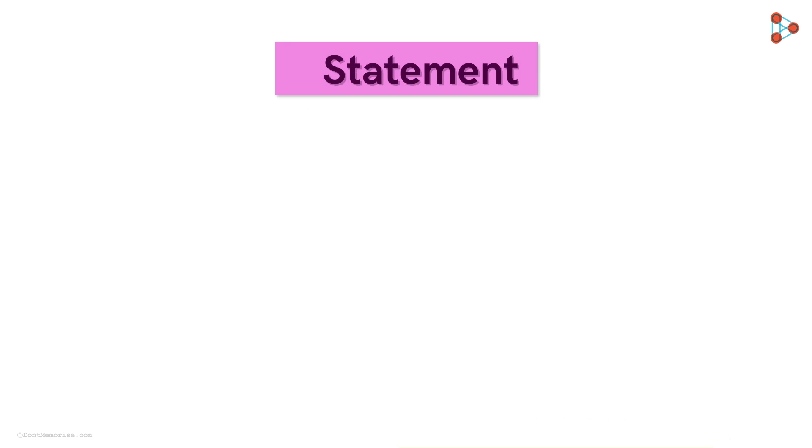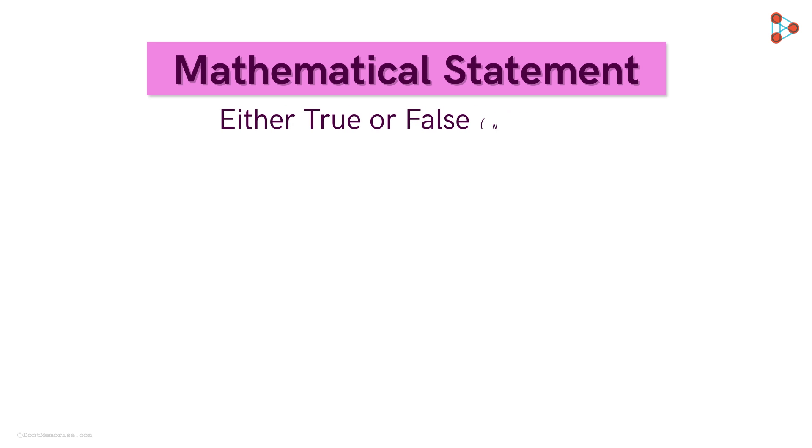So what is a mathematical statement? A statement is called a mathematically acceptable statement if it is either true or false. But not both.